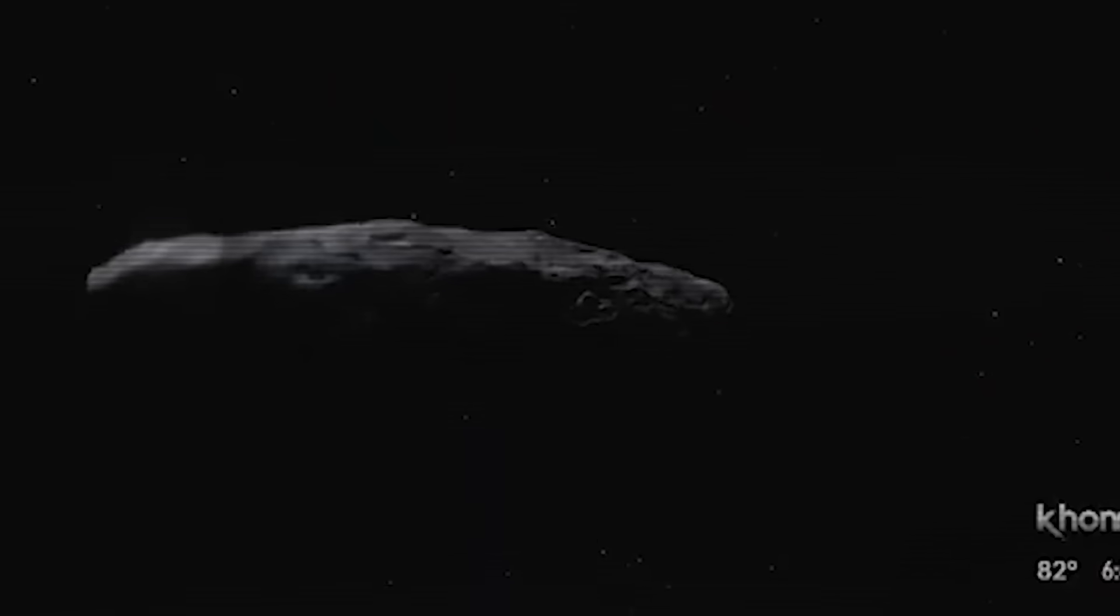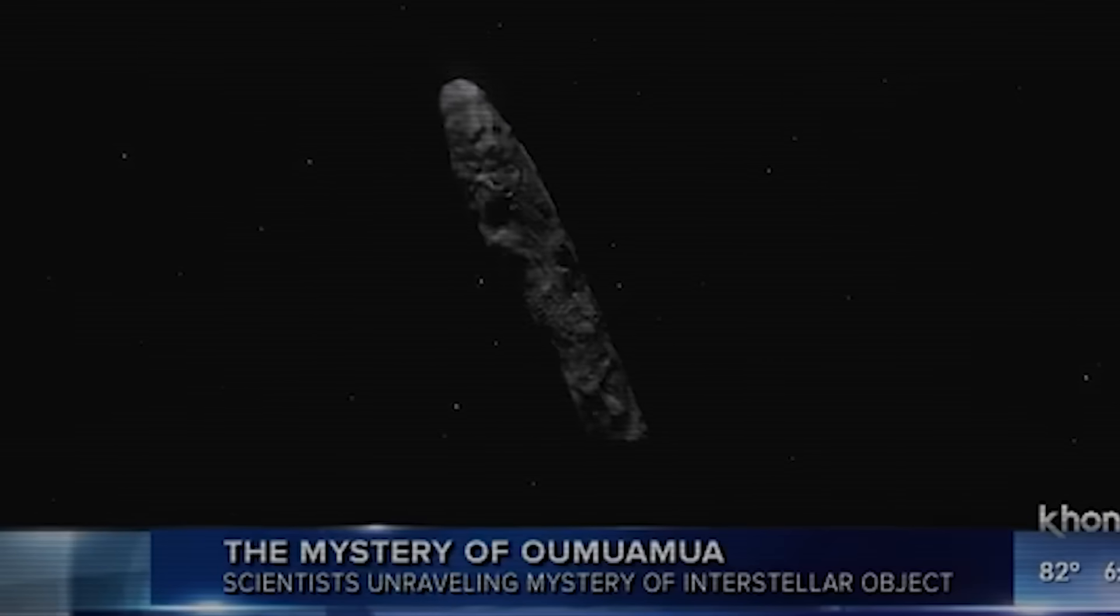They said Oumuamua is probably a comet. The only problem is there wasn't any cometary tail. This unidentified object was found in our solar system.